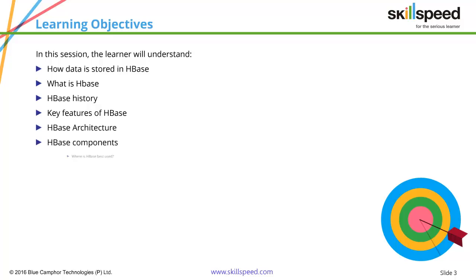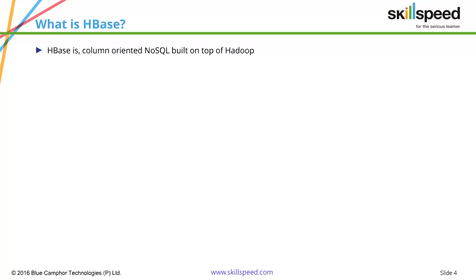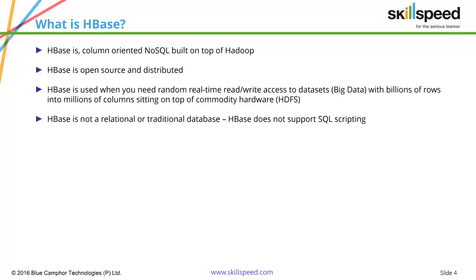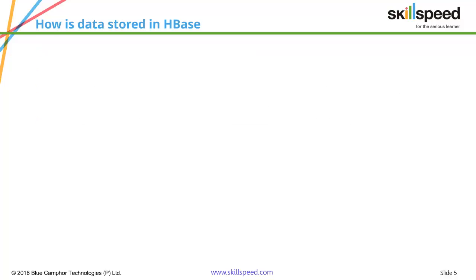HBase is a NoSQL database which falls into a category called column-oriented NoSQL databases. It is an open-source and distributed database, and it is used when we need near real-time read and write access to big data — when you have billions of rows and millions of columns sitting on top of Hadoop. HBase is not a traditional relational database and does not support SQL scripting.